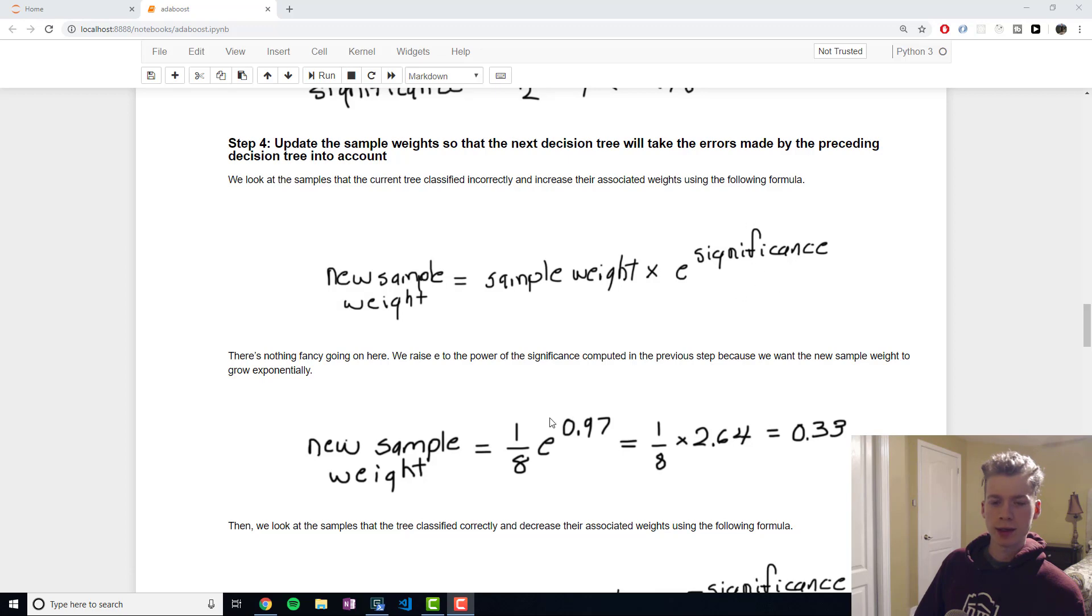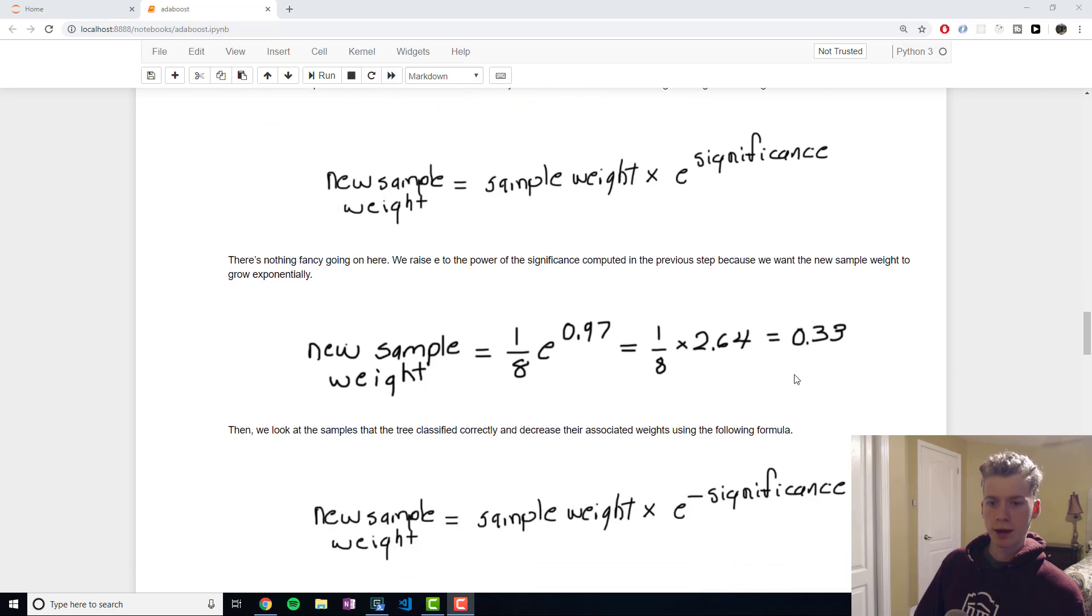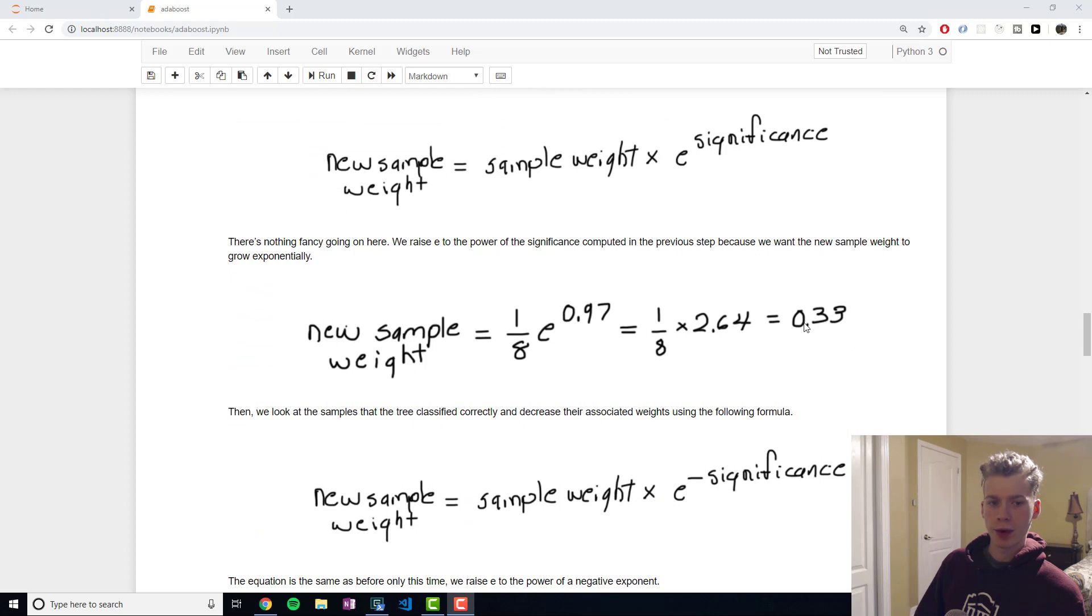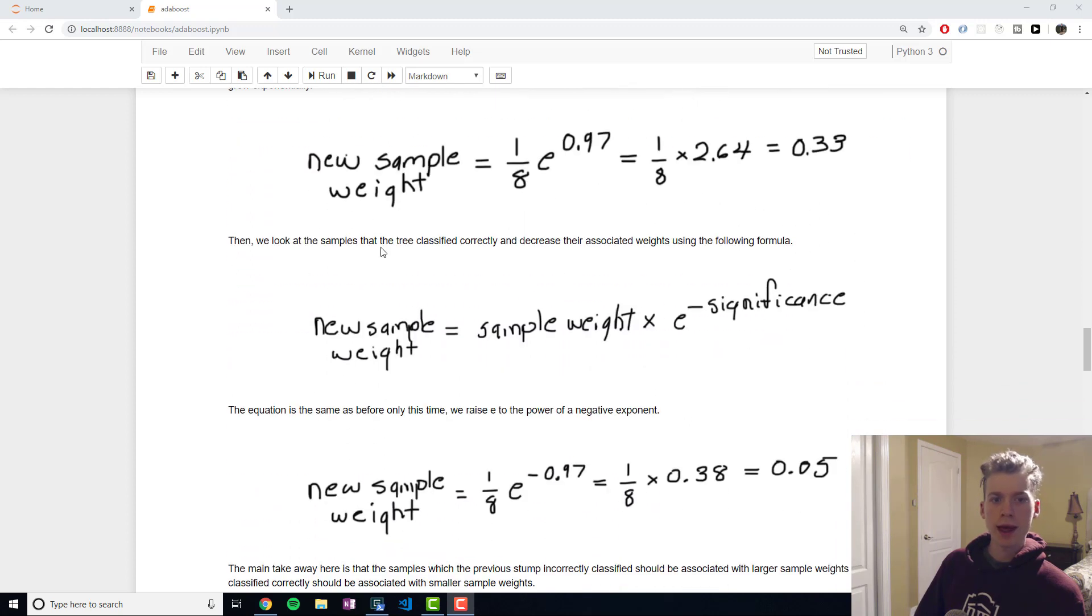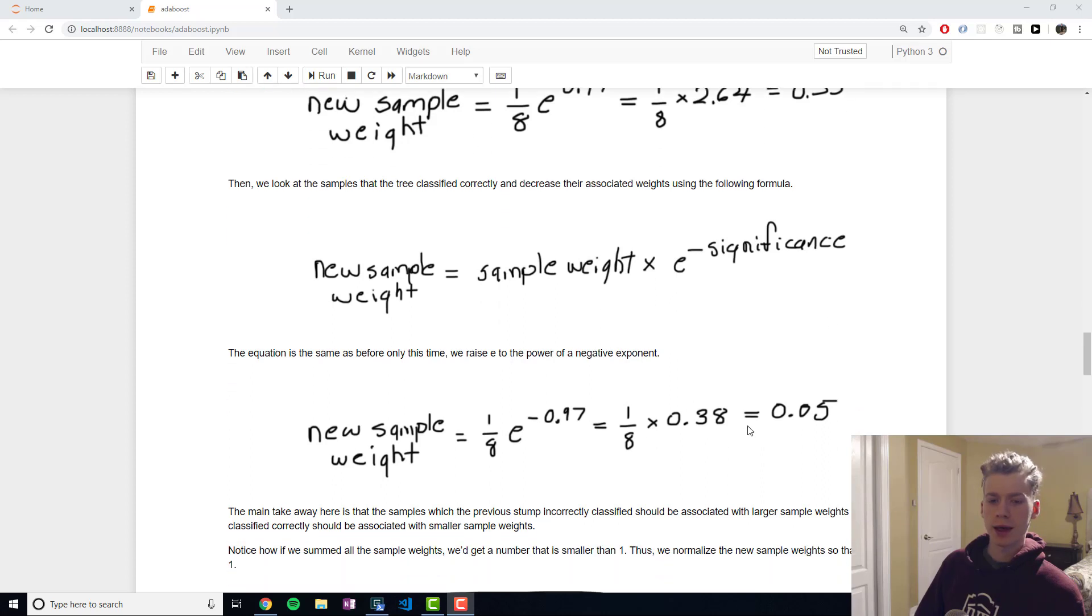The formula for that is sample weight times e to the significance. The significance is 0.97, and we end up getting 0.33. Then we want to modify the samples that it classified correctly. The way we do that is we multiply the sample weight by e raised to the power of the negative significance. The new sample weights for the correctly classified samples are going to be 0.05.